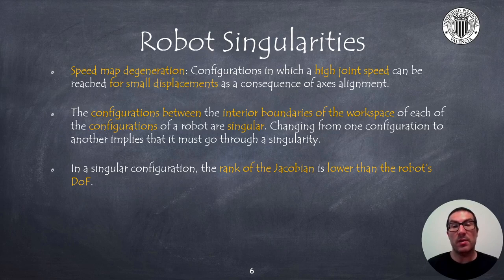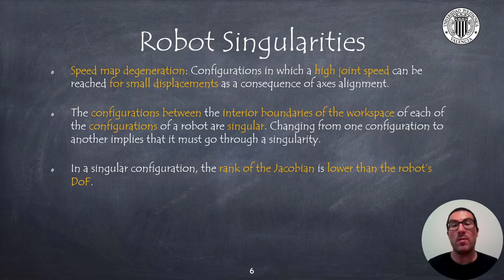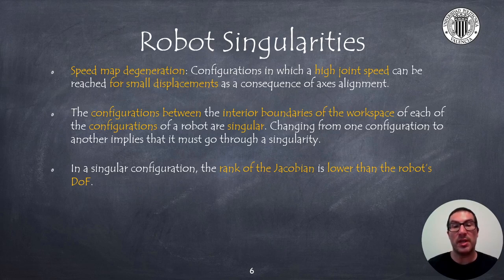Robots can have singularities. These configurations must be known in advance so we have to try to avoid them as much as possible, since they imply that the robot will be blocked in some directions. Singularities appear when we try to move the robot in Cartesian space and the inverse kinematic calculation fails. Singular configurations can cause a speed map degeneration — that is, they cause high joint velocities for small end-effector displacements.